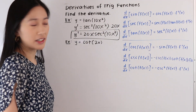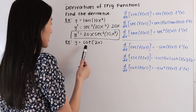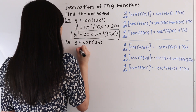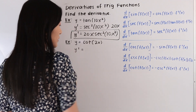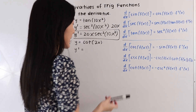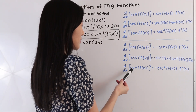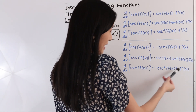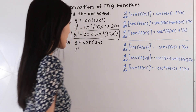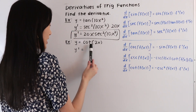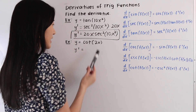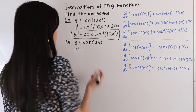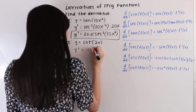So in this last example here, we have the function y is equal to cotangent of 2x. And so let's go ahead and take its derivative. So we have y prime is equal to, and we can see from our table here that the derivative with respect to x of cotangent of f of x is equal to negative cosecant squared of f of x times f prime of x. So the first thing that we're going to do is take the derivative of our trigonometric part, keeping our angle the same. So the derivative of cotangent is equal to negative cosecant squared.